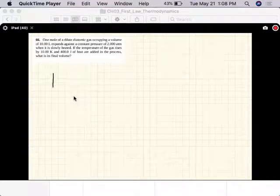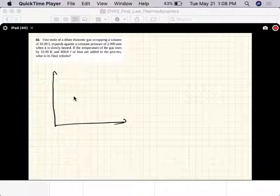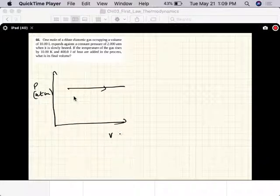Okay, so it's a constant pressure process, isobaric process. The volume is in liters, so it expands from 10 liters. If the rise in temperature is given and heat is added in the process, what's the final volume?